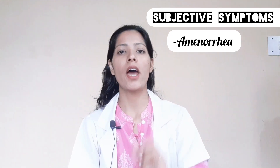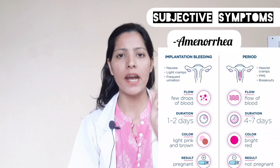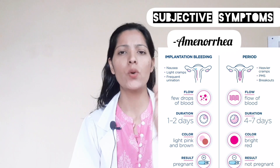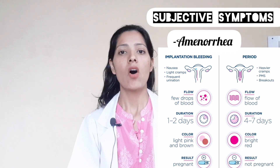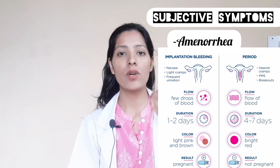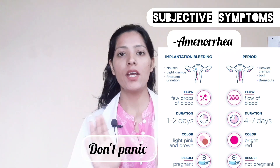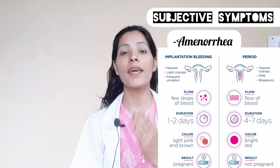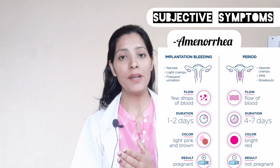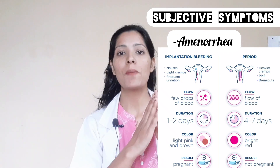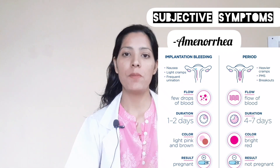If bleeding does happen, it becomes very scanty — very short, lasting only one to two days. This is called implantation bleeding, and it becomes a placental sign.